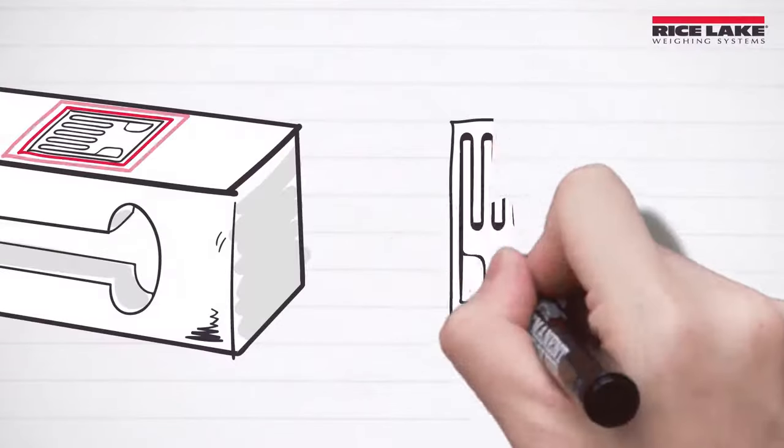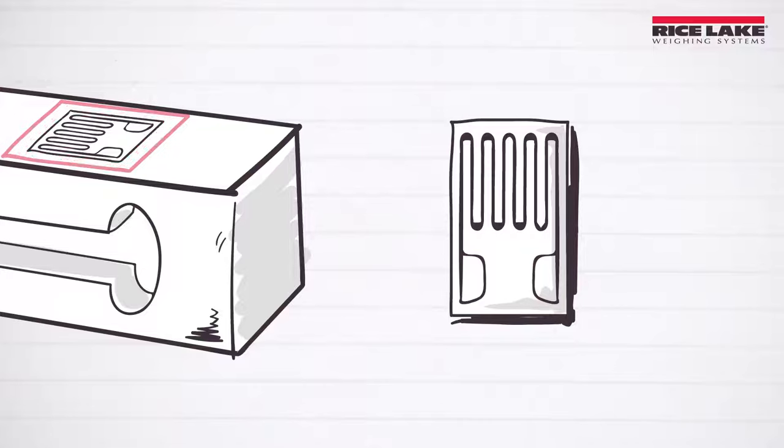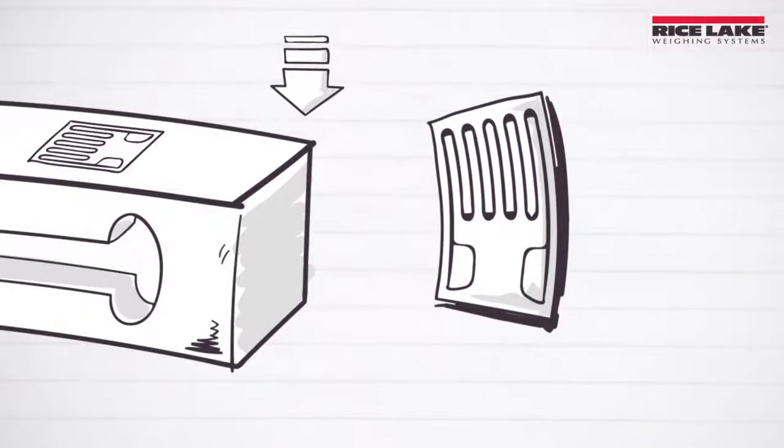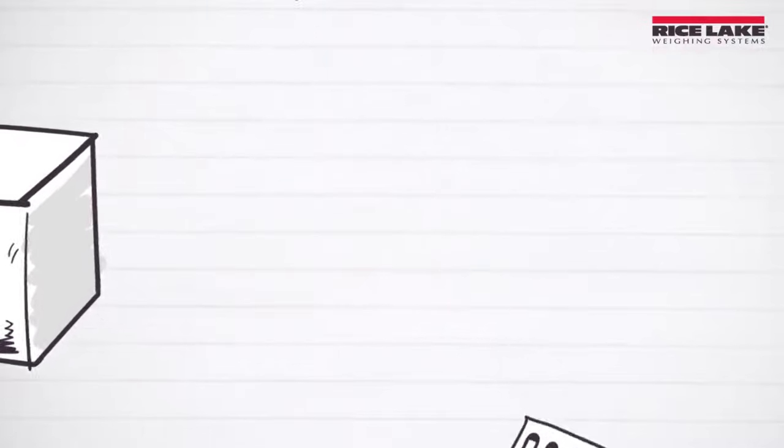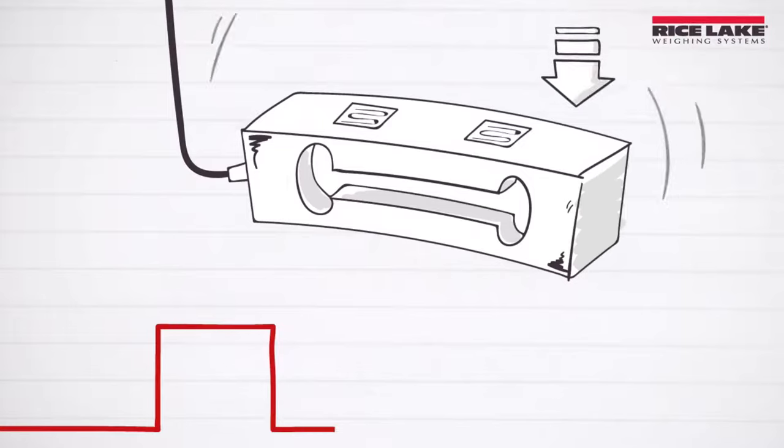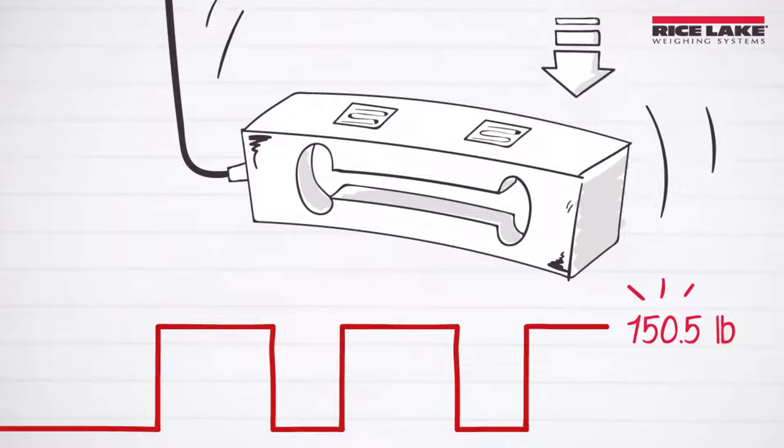This analog signal change is due to the amount of electrical resistance the bending causes to a small device inside the load cell called a strain gauge. The load cell's analog signal change is then read by an electronic device and turned into a digital weight value.